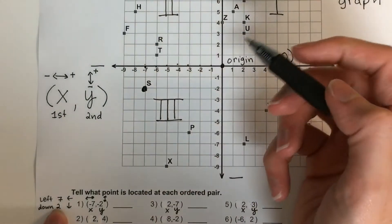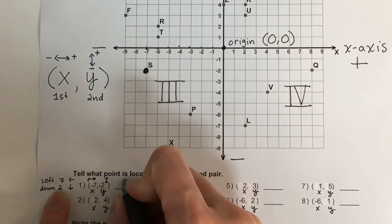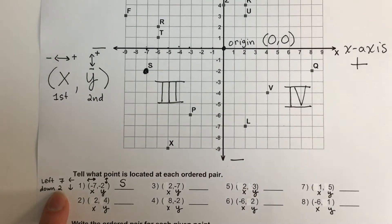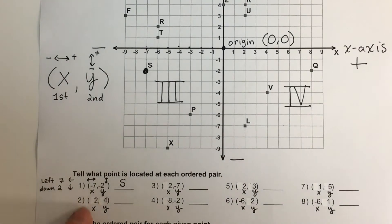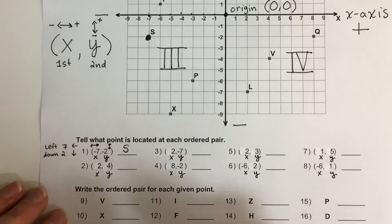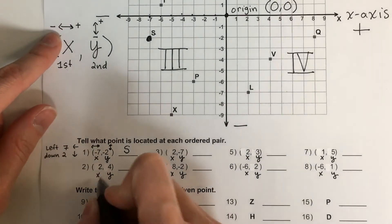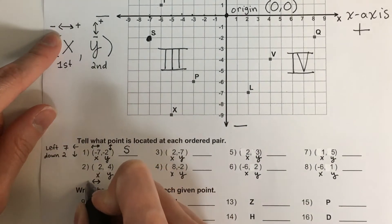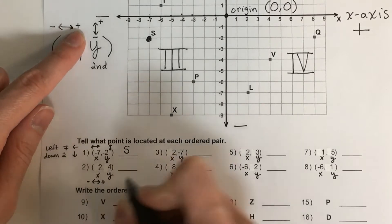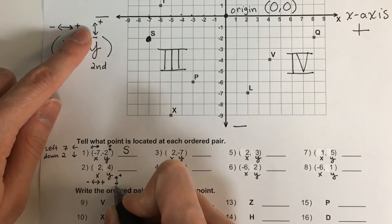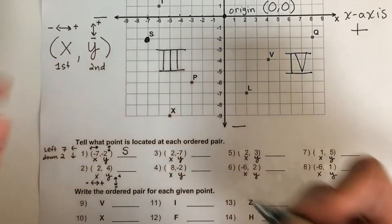So my answer for number one is S. Now we're going to do number two again. Remember: x is left and right. Left is negative, right is positive. Y is up and down. Up is positive, down is negative.